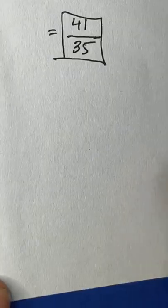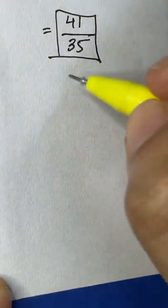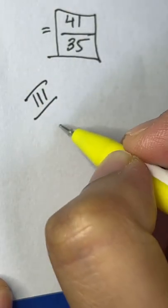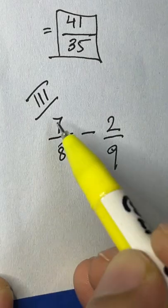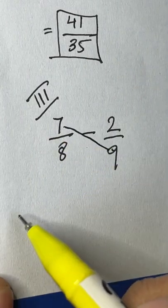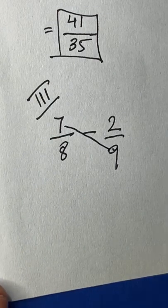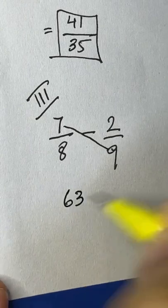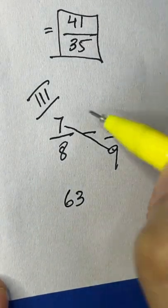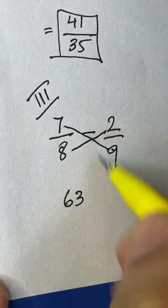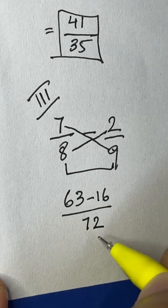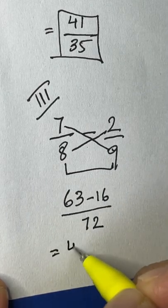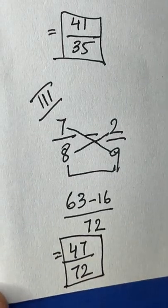The butterfly method also works for subtraction. For 7/8 minus 2/9, do cross multiplication: 7 times 9 is 63, and 8 times 2 is 16. Since it's subtraction, we do 63 minus 16, and multiply the denominators: 8 times 9 is 72. So the answer is 47 over 72.